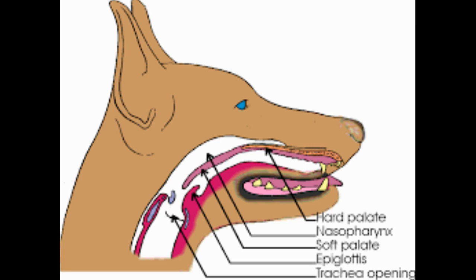The pharynx is a common passage for both respiration and the digestive tract and it allows only a single process at a time. When food enters near the pharynx, breathing stops, the soft palate is elevated, and this closes the pharyngeal opening of the nasopharynx. Then the tongue pushes up against the hard palate, pushing the bolus to the back of the mouth.